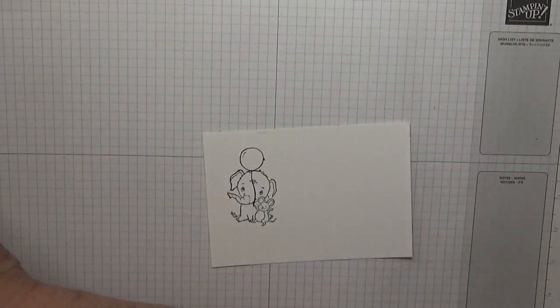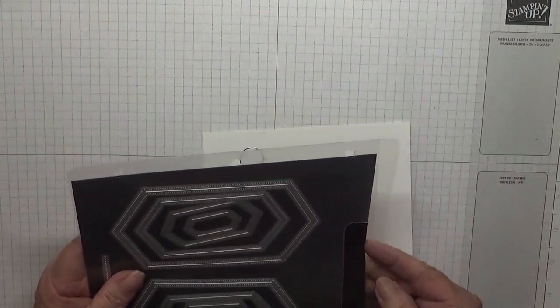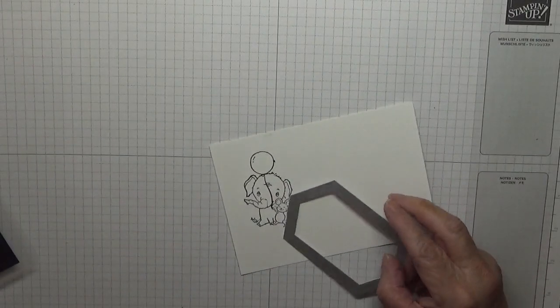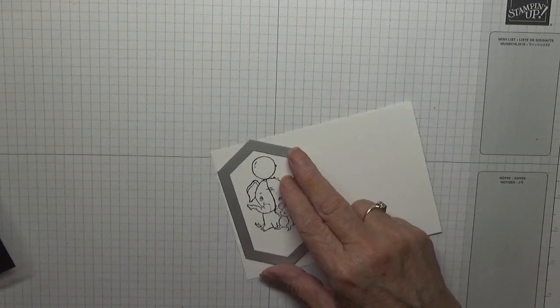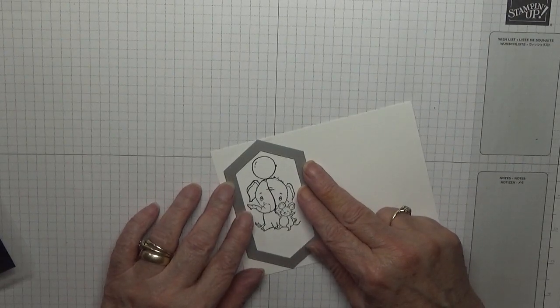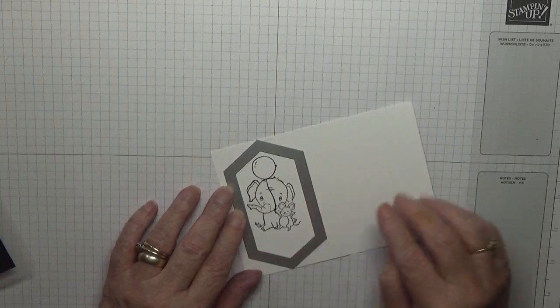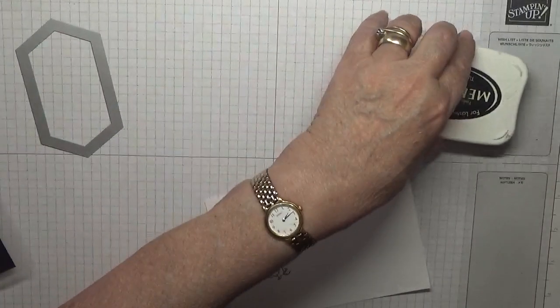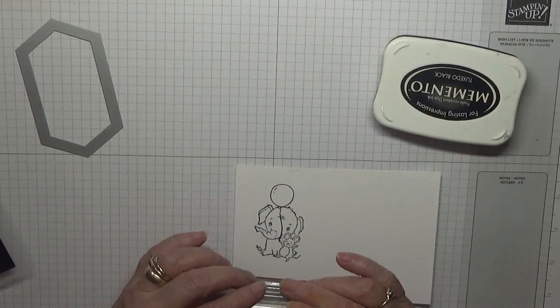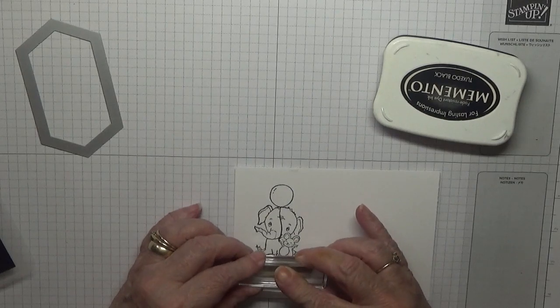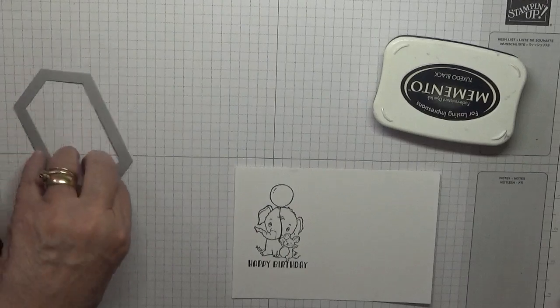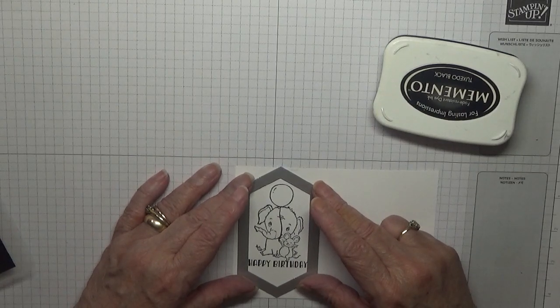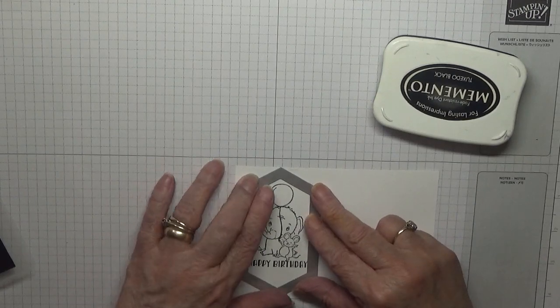Now, to cut this out, we're going to use this one. It's just long enough. But we need to stamp in Happy Birthday. So I am going to stamp Happy Birthday right under the mouse and the elephant. And then pop that on, like that. I'm going to cut it out now.